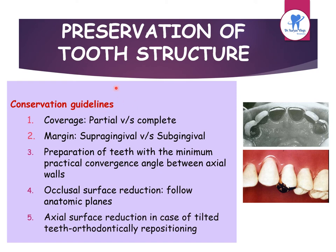Conservation guidelines include: use of partial coverage rather than complete coverage restoration; supragingival margins are better than subgingival; preparation with minimum practical convergence angle between axial walls; occlusal surface reduction must follow anatomic planes to produce uniform thickness; and axial surface reduction in case of tilted teeth, which should be orthodontically repositioned.